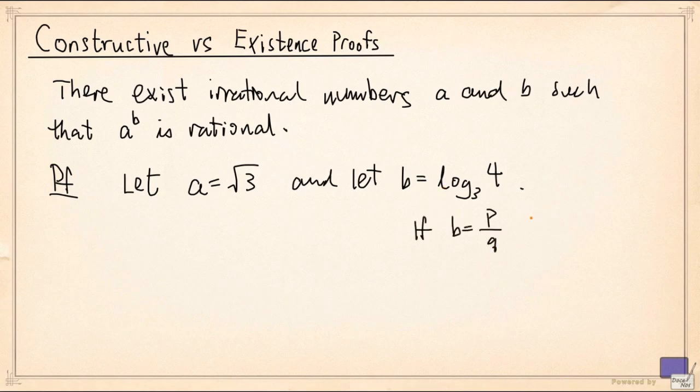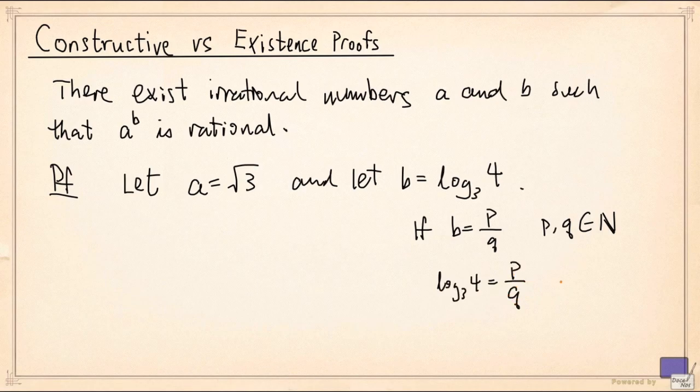Now if b were rational, we could write b = p/q for some natural numbers p and q. We can assume p and q are natural numbers because log₃(4) ≥ 1. And that means log₃(4) = p/q, and so 4 = 3^(p/q).